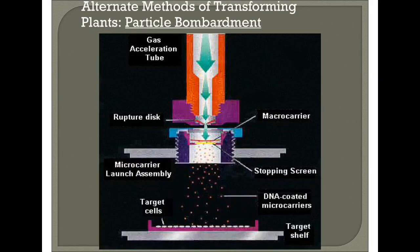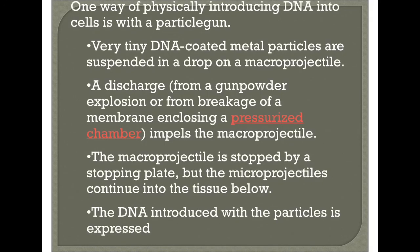Alternative methods of transferring DNA into plants include particle bombardment. In this method, DNA is transported using gas acceleration via a micro-carrier and stopping screen to target cells. DNA is coated with micro-carriers. A particle gun physically introduces DNA into cells — tiny DNA-coated metal particles are suspended in a drop on a micro-projector. An explosion from the breakage of a membrane enclosing a pressurized chamber propels the micro-projector; it is stopped by a stopping plate, but the micro-carriers continue into the tissue below. The introduced DNA is then expressed.